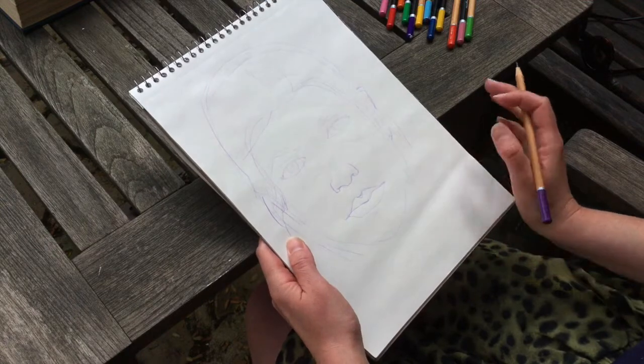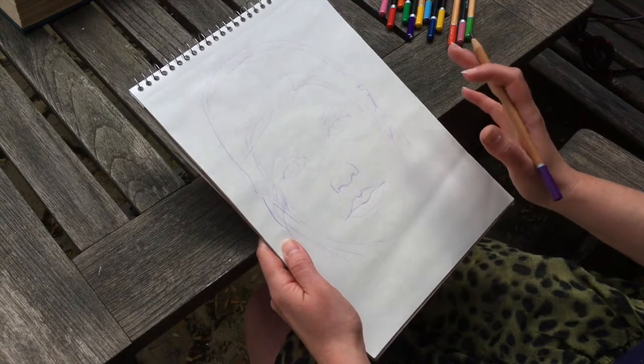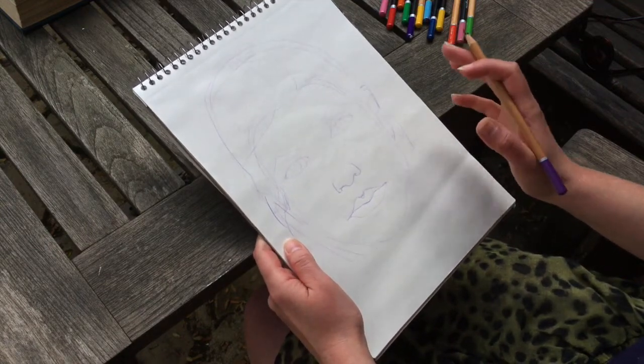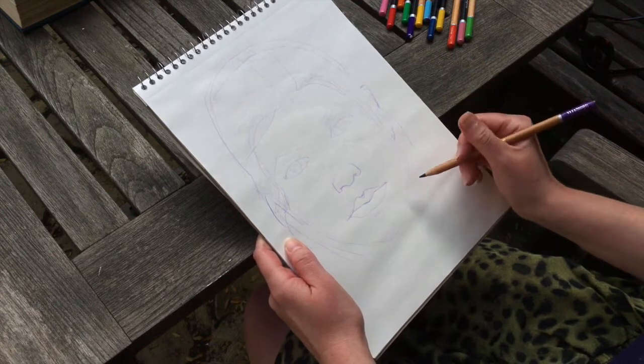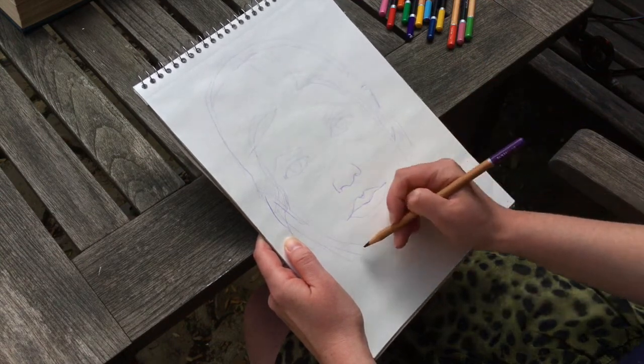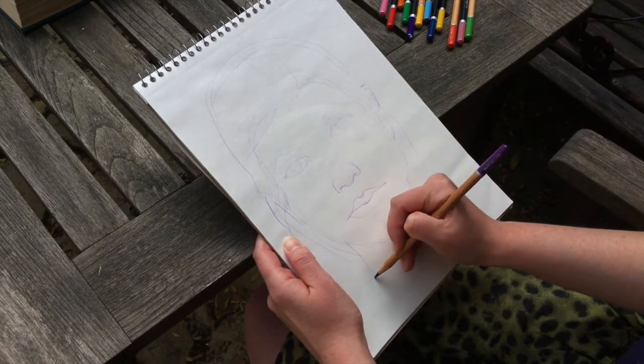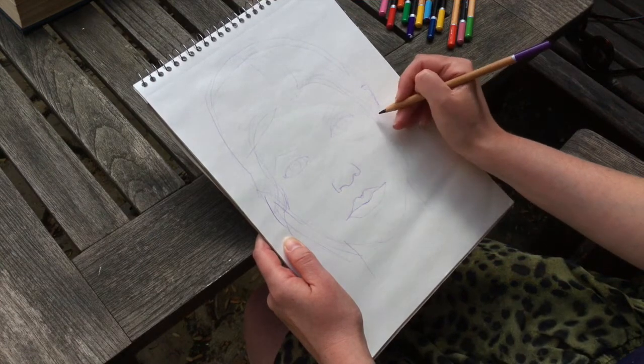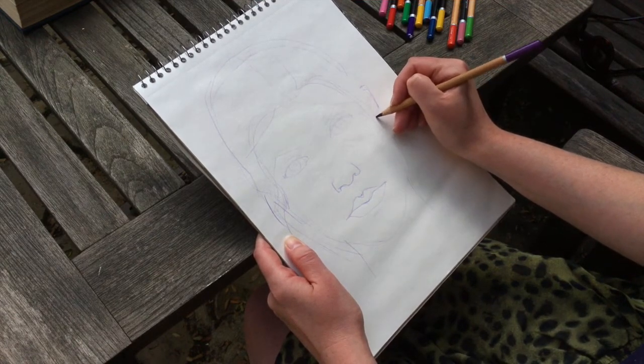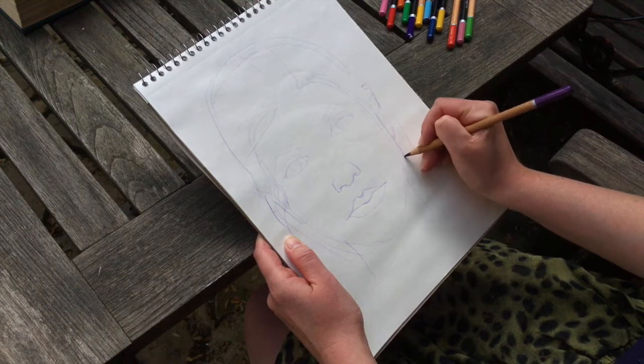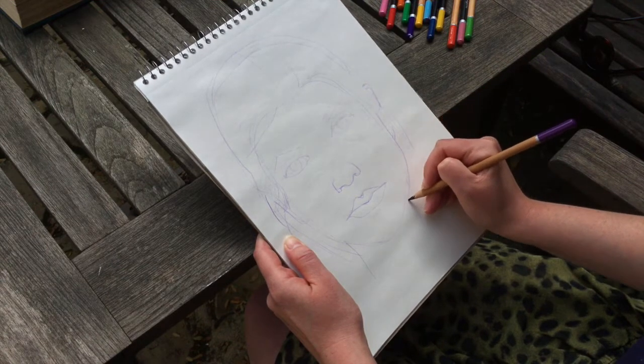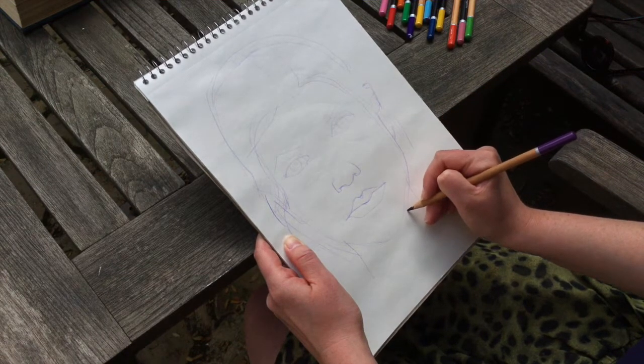And so, step eight. Now you've got all the basics in. Have a look and make any adjustments you want to make. Add the neck in now. And really look and check the shapes of your face. I'm just going to make that a bit softer and rounder and larger.